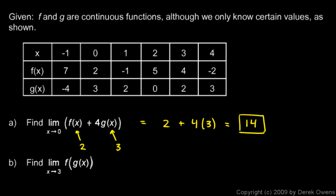Question B, find the limit as x approaches 3 of f of g of x. Okay, let's think about this. x is approaching 3, so what's happening to g of x? Well, at 3, g of x is 2. So this right here, g of x, that thing right there is 2. When x gets close to 3, that gets a value of 2. So what we have is f of 2.